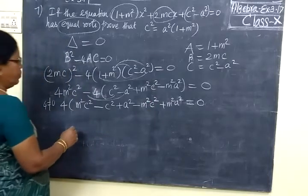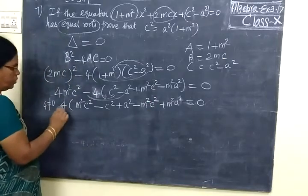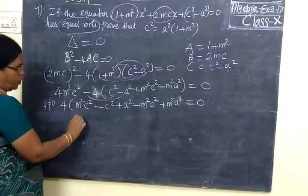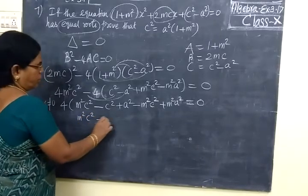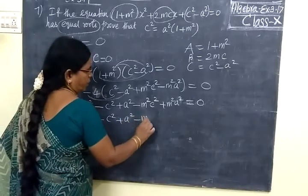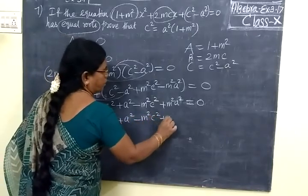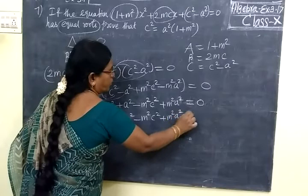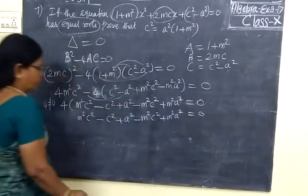Now which one will be cancelled here? 4M²C² minus 4C² plus 4A² minus M²C² plus M²A² equal to 0.